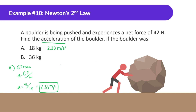Part b: the same 42-newton net force, but the mass is 36 kilograms. Which will have more acceleration? Part a, because it has less mass. So 42 divided by 36 gives 1.17 meters per second squared.